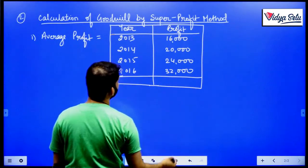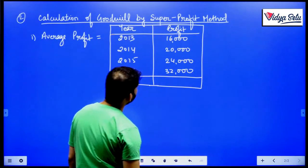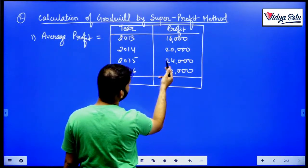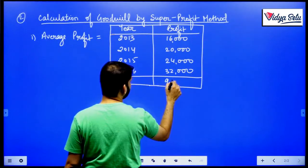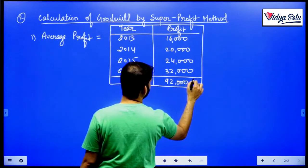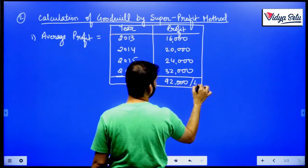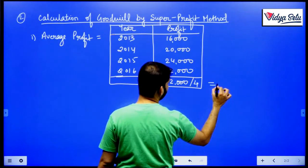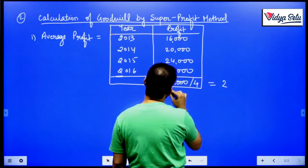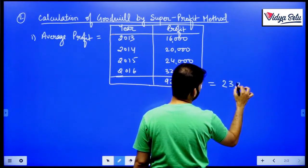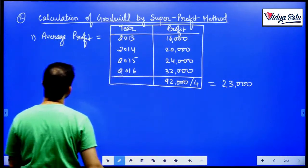Average profit: 16 plus 20 is 36, plus 24 is 60, plus 32 is 92 — total 92,000 divided by 4 years. That comes to 23,000. So 23,000 is our average profit.